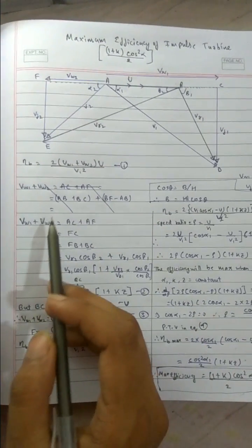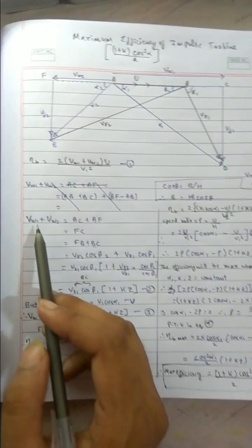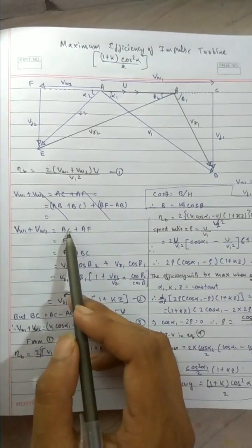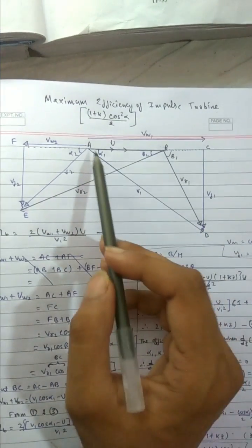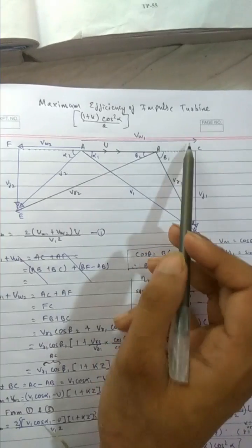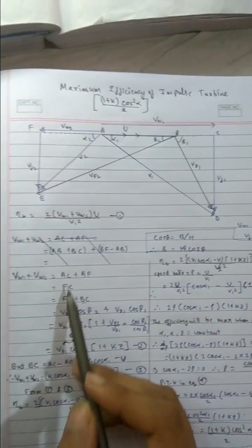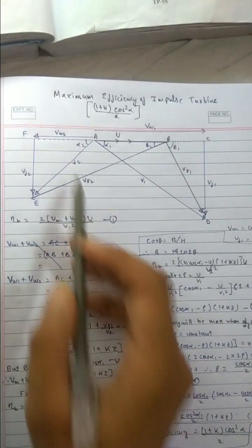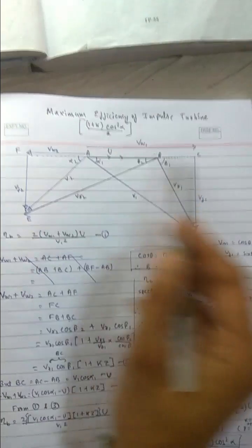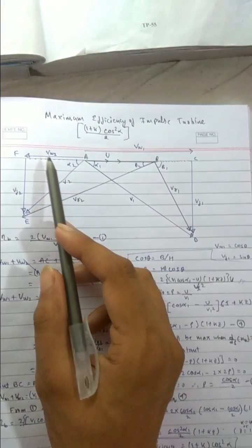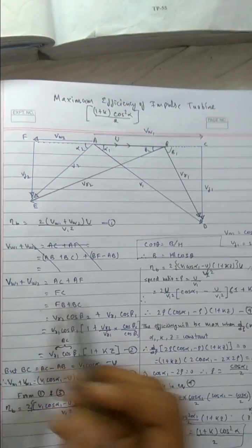So first let's find out the value of VW1 and VW2. VW1 plus VW2 equals to AC plus AF. VW1 is from A to C so VW1 is AC. VW2 is from A to F or FA, so AC plus AF. Their whole sum will be AC plus AF, that is FC.